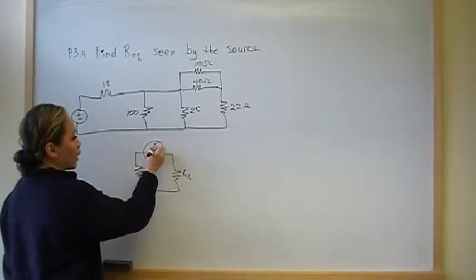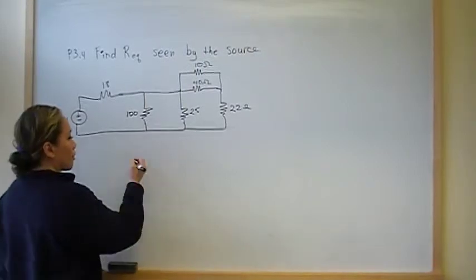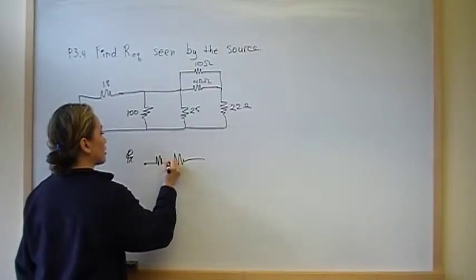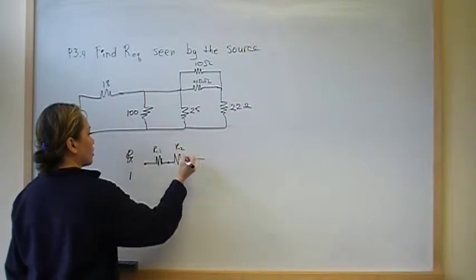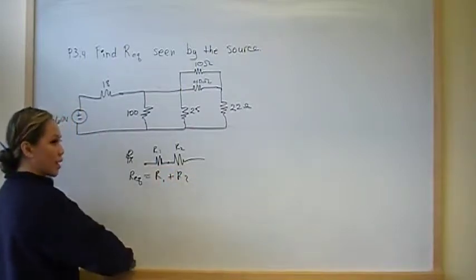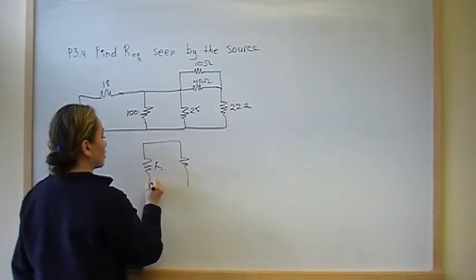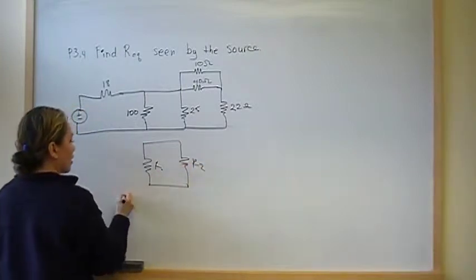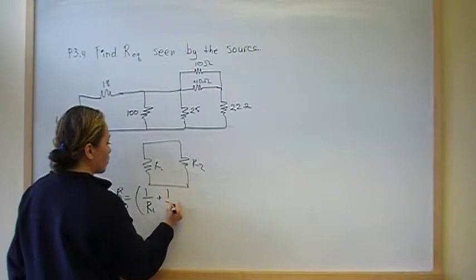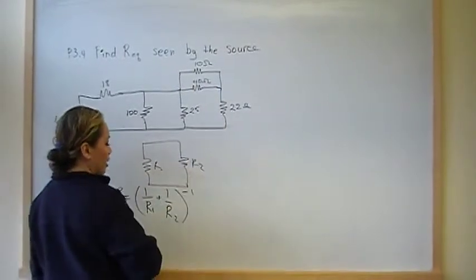R1 is in parallel with R2, which is in series with R3. Resistors combined in series: the equivalent resistance is just R1 plus R2. For resistors connected in parallel, Req will be the sum of the reciprocals — so it's 1 over R1 plus 1 over R2, and then you take the reciprocal of that. You do that for however many resistors you have in parallel with each other.